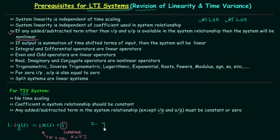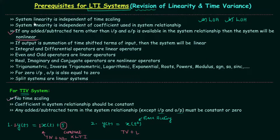In example two, y(t) = x(t²). There is time scaling present. Looking at the first condition for time invariant systems, it says there should be no time scaling — but here we have time scaling, so the system is time variant. However, the system is linear, because system linearity is independent of time scaling. Since the system is time variant and linear, it is not an LTI system.